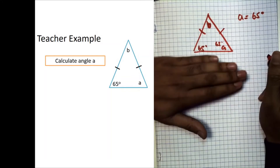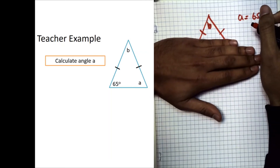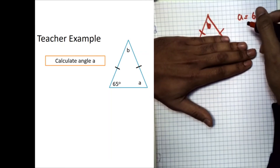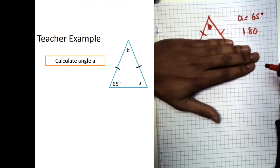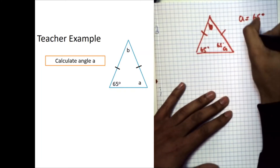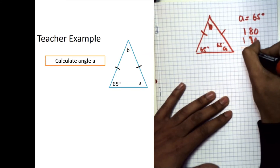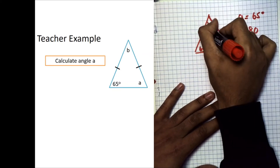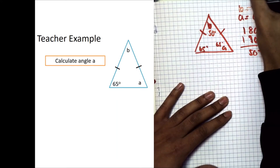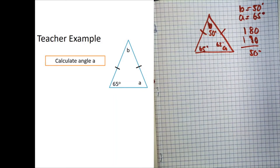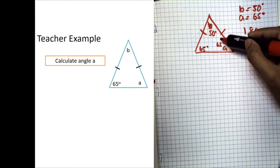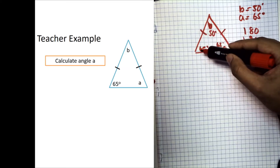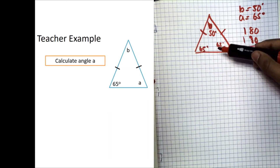Because it's isosceles, angle a is also 65 degrees. Now we can cover those two known angles and subtract from 180. 65 plus 65 equals 130, and 180 minus 130 gives us 50 degrees. So angle b is 50 degrees. Key point: the tick marks denote equal side lengths, and from the base angles being equal we knew both were 65 degrees.